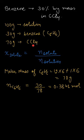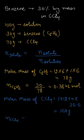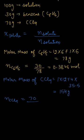Similarly, we can calculate the number of moles of carbon tetrachloride. The molar mass of CCl4 would be given by 1 into 12 for carbon, plus 4 into 35.5, that is the atomic mass of chlorine. So that would come out to be 154 grams. Now we can calculate the number of moles of CCl4, that would be the given mass, 70, divided by the molar mass of CCl4, which we have calculated is 154.